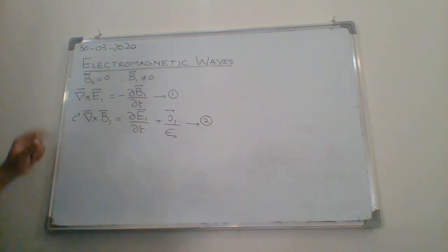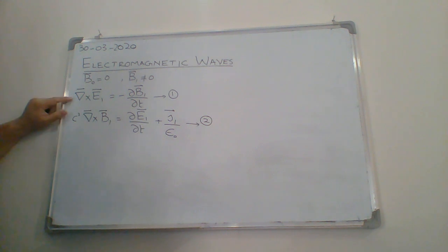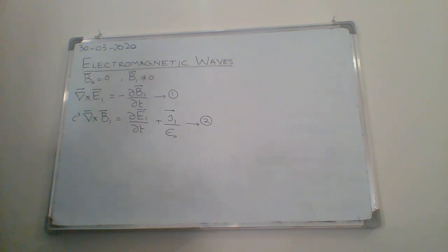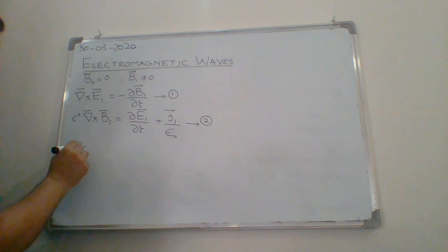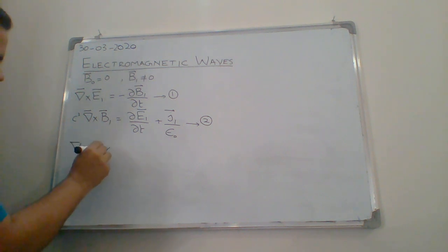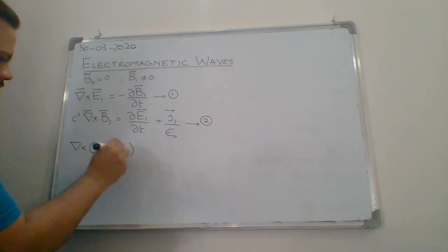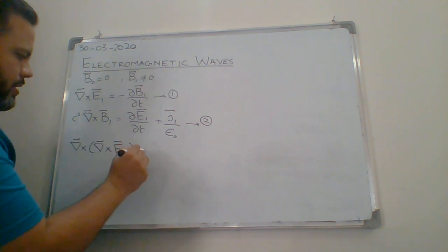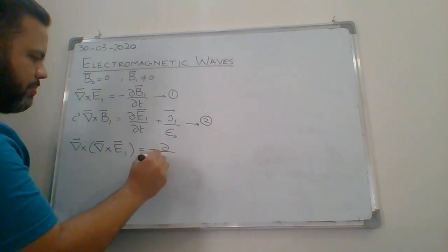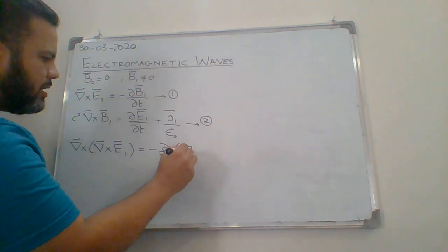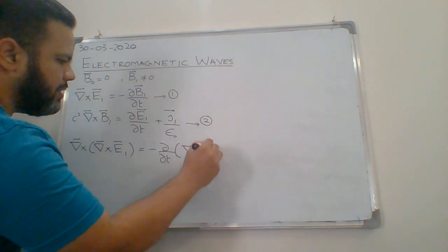In order to solve this equation, I'm going to take the curl of Faraday's law and substitute the value of del cross B1 into equation 1. So we get del cross del cross E1 equals minus partial by partial t of del cross B1.